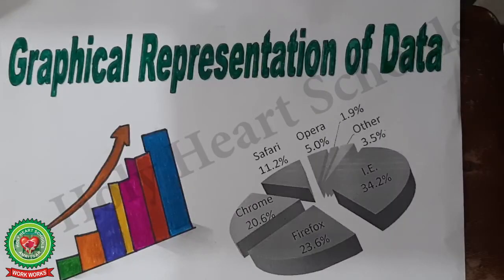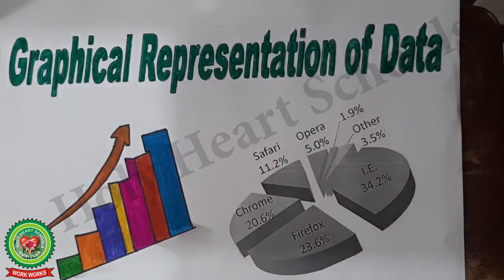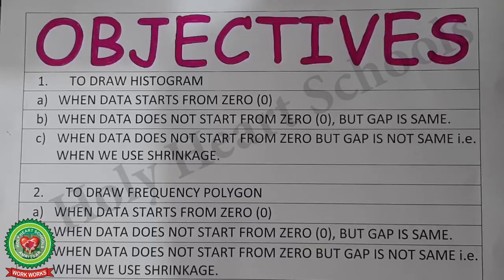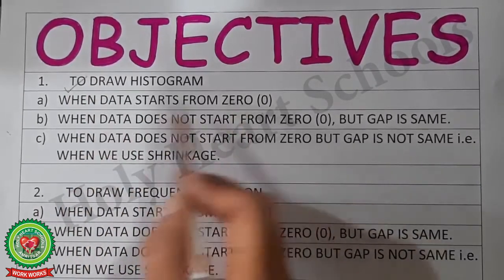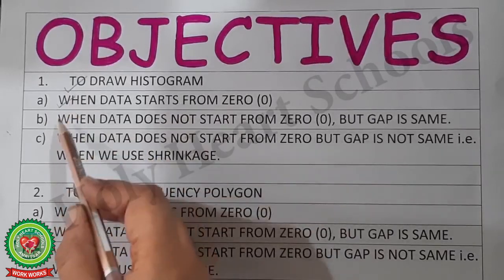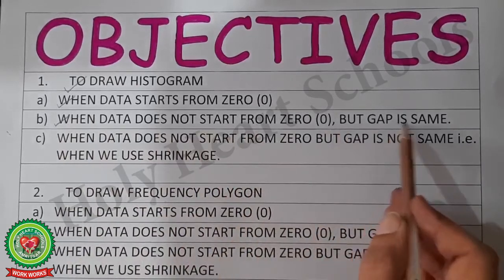Welcome to math class. In today's class we will start a new chapter: graphical representation of data, which tells us how to visualize data graphically. Today we will learn how to draw a histogram when data starts from zero — this is case number one — and case number two, when data does not start from zero but the gap is the same.